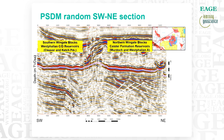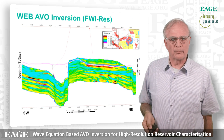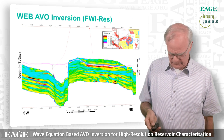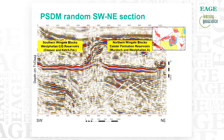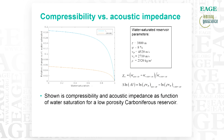Now we invert this using wave equation-based inversion, and all of a sudden you see these red blobs. They represent high compressibility, meaning they are really porous and/or hydrocarbon-filled reservoir. If you toggle between the amplitude display of the migration and the wave equation-based inversion, in the migration it doesn't really stand out, but in the wave equation-based inversion these things really stand out.